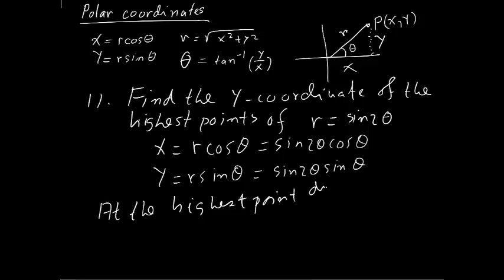At the highest point, dy dx is 0. Why? Because in calc 1, we've seen that if I have a graph, to find max I need to say f prime equals 0. So f prime is dy dx.